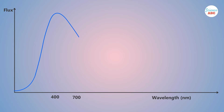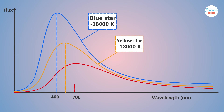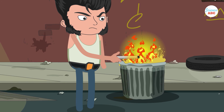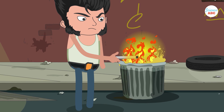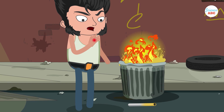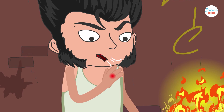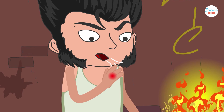On the other hand, at high temperatures, the graph peaks at shorter wavelengths, which corresponds to colors that we are able to see. The process is comparable to how the color of an iron rod changes with the application of heat, as mentioned earlier, resulting in an increase in temperature.